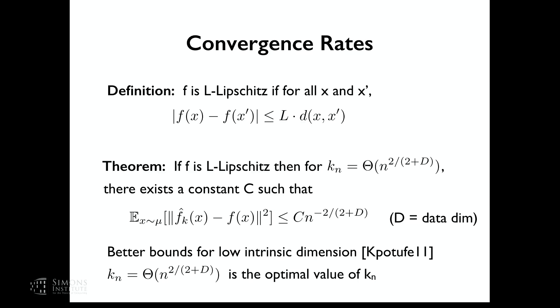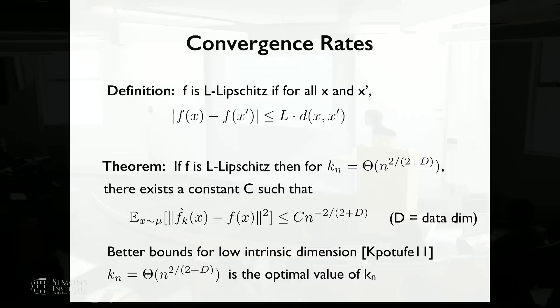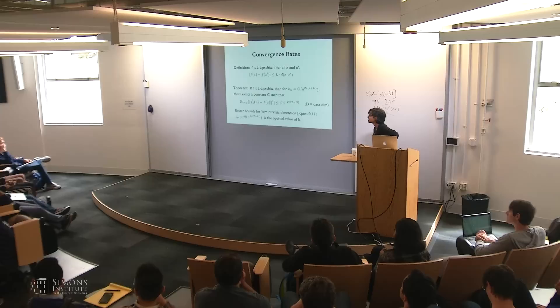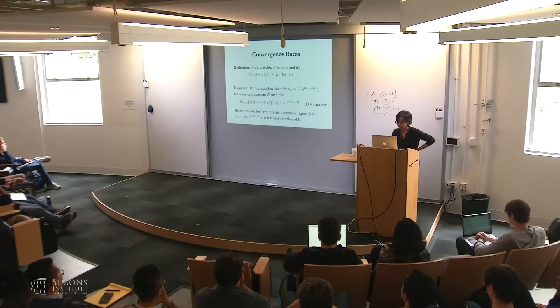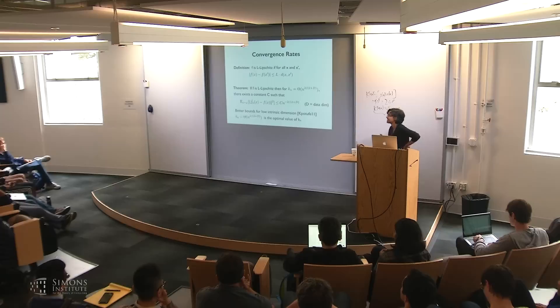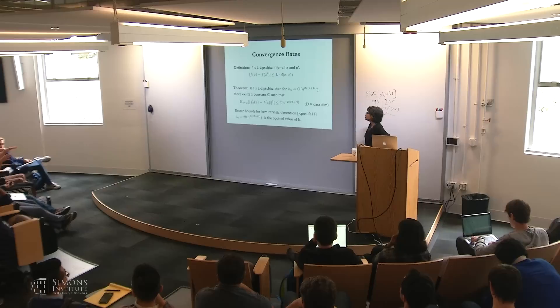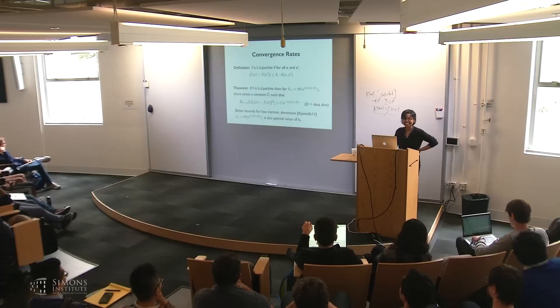Question: aside from intrinsic dimension, are there other natural assumptions on the distribution that would make this bound better? For regression it's a little hard; for classification it gets a lot better. For regression, you can have holder continuity and smoothness-type assumptions. Question: does the low intrinsic dimension result assume you're using the geodesic metric of the manifold? No — you're using regular k-NN, and that's what makes it so interesting.